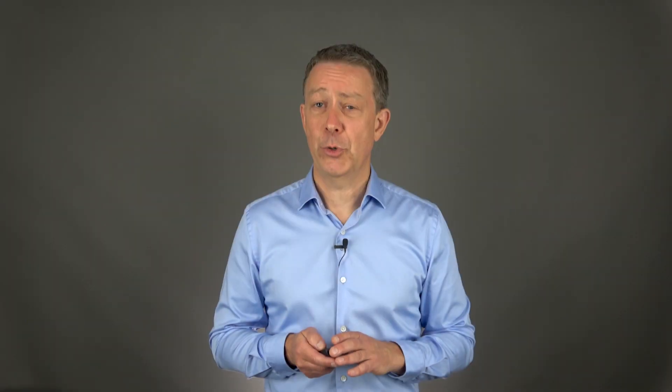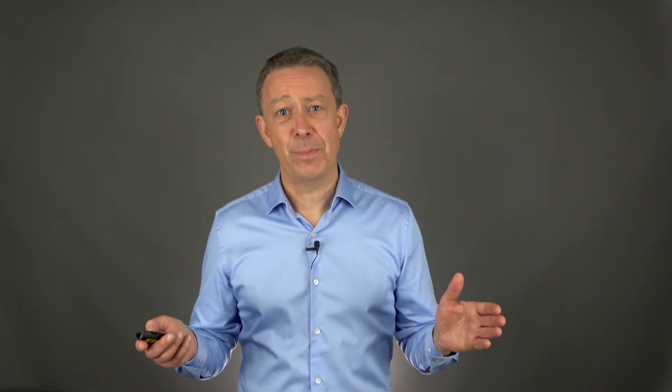How about knocking on the doors of, for instance, Google or Apple and asking for their unit test results? I guess they won't open the door. In such cases, you must work with risk management and justify why OTS software is acceptable to use despite the lack of insight into their development methodologies and maintenance work. Alternatively, you can use OTS software suppliers who can provide enough details.